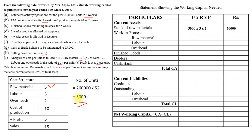For WIP labor: 5,000 × 3 × 2, but remember — under WIP, labor and overhead answers must be halved. So 5,000 × 3 × 2 × half = 15,000. For WIP overhead: 5,000 × 2 × 2 × half = 10,000. Finished goods is always on the cost of production rate, which is 10, so 5,000 × 10 × 2 weeks = 1,00,000.